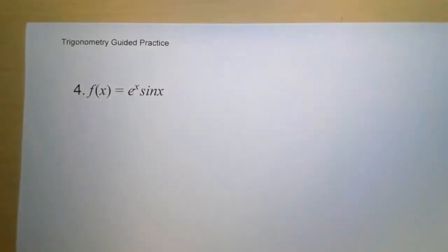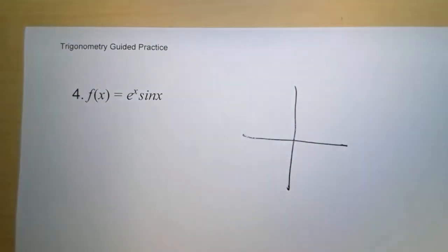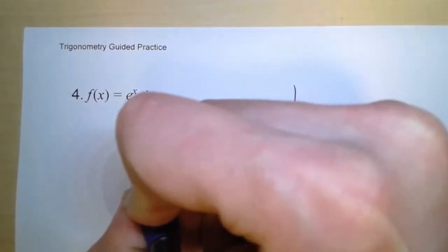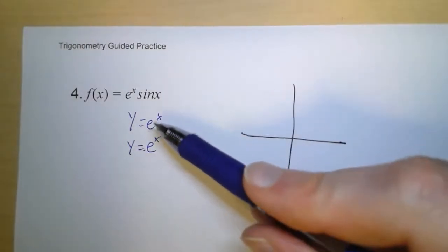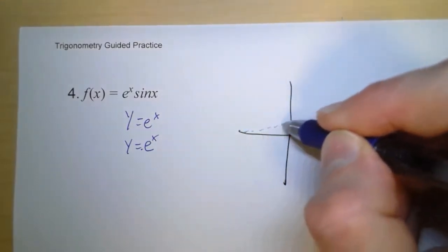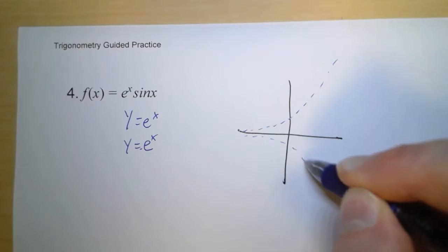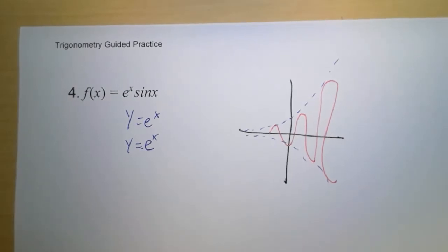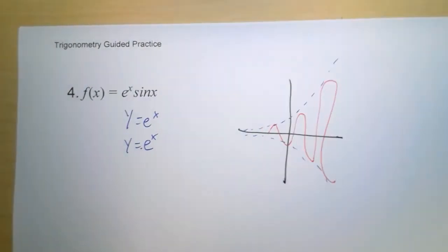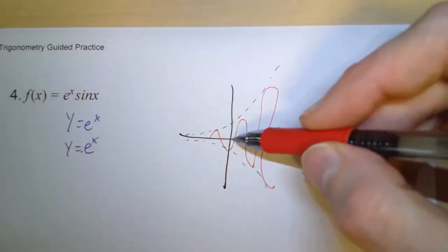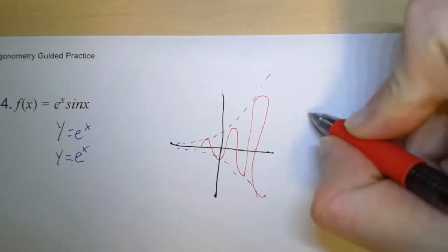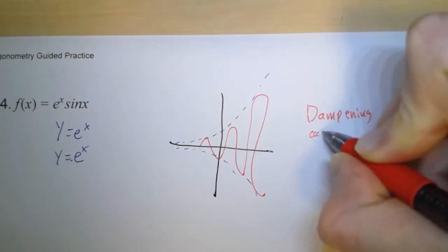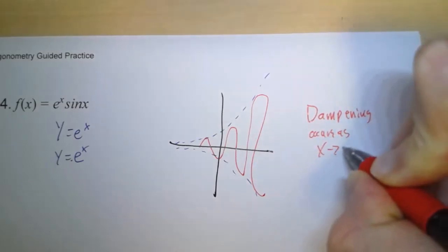So on the next one, we have e to the x sine of x. So our boundaries are y equals e to the x and y equals negative e to the x. Now, e is a positive number greater than 1. So that means it's going to go like that and like that. So where does the dampening occur? Well, it occurs as we go off to the left. So that means not at 0. The amplitude hasn't gone to 0 yet. It has to keep going off to negative infinity. So that's where the dampening occurs. It occurs as x goes to negative infinity.